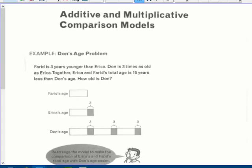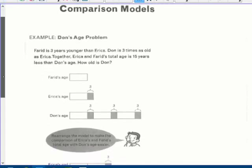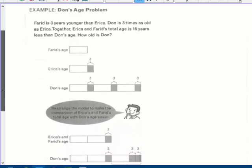Additive and multiplicative comparison models. Here's an example, Don's age problem. Farron is three years younger than Erica, so you're going to draw his bar a little bit shorter than Erica's and add that little extra three years on. Don is three times as old as Erica, so take Erica and replicate it three times. So one, two, three. So he's three times her.